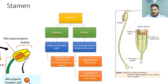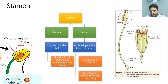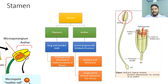The anther is a terminal structure which is bilobed and dithecous. Bilobed means you have two separate lobes. Each lobe is having two chambers or two theca. So there are two lobes left and right, and each lobe has two theca or two chambers. That is why the anther is called bilobed and dithecous. There are longitudinal grooves here which separate the theca and help in the process of dehiscence.